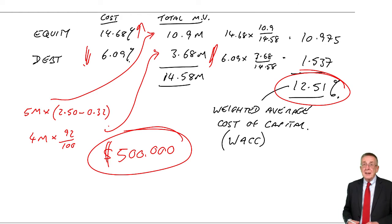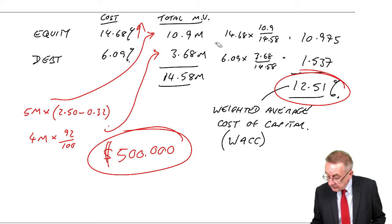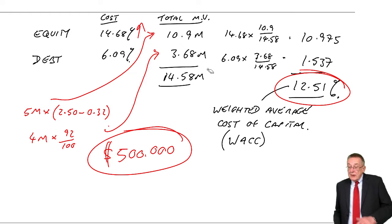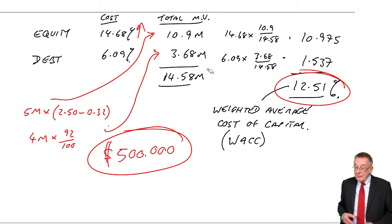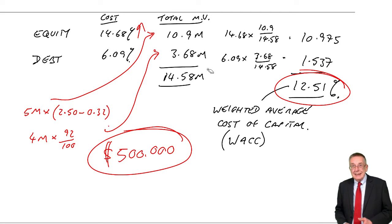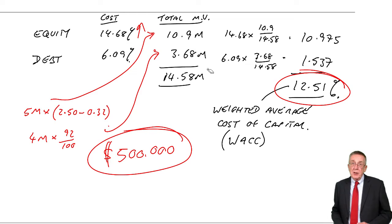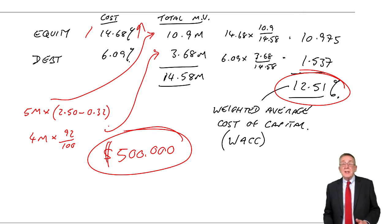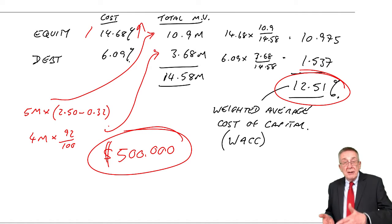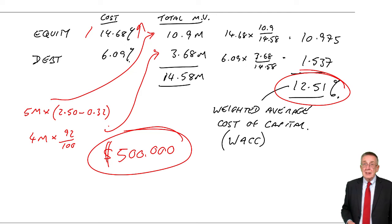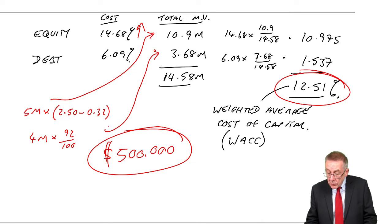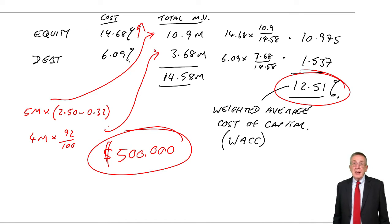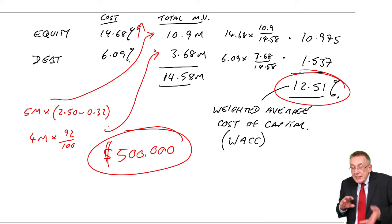You couldn't be asked to calculate this in the exam. But that's problem number one: depending on how you raise the money, if it changes the gearing, it's going to change the cost of borrowing. Raise the money all in equity and the gearing will be reduced — there's less risk to shareholders and it's likely to cost less. The weighted average cost of capital stands to change if the gearing changes.